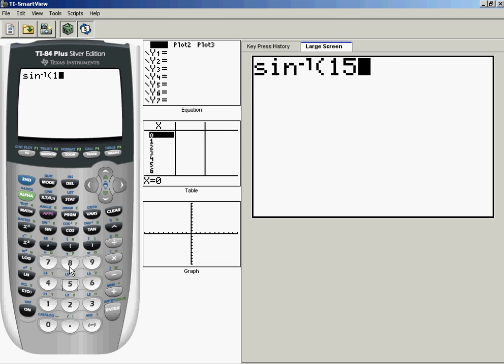So 15 sine 110 divided by 28. And sometimes it's good to make sure you've closed all your parentheses. Is that going to do what I want in terms of order of operations? And it is.